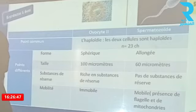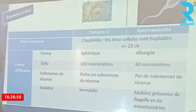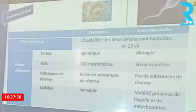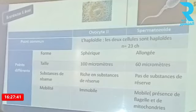En commun : ce sont des cellules haploïdes gamétiques, deux gamètes issus par la méiose, des cellules haploïdes dont le nombre de chromosomes est égal à 23. En termes de différence : la forme n'est pas la même — forme sphérique pour l'ovocyte, allongée pour le spermatozoïde. La taille : 100 micromètres pour l'ovocyte contre beaucoup moins pour le spermatozoïde. La présence de substances de réserve : l'ovocyte 2 est riche en substances de réserve, pratiquement absentes chez le spermatozoïde. La mobilité : l'ovocyte 2 est immobile, alors que les spermatozoïdes sont mobiles grâce à leur flagelle.